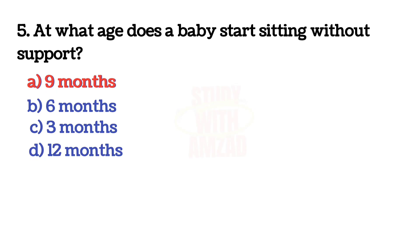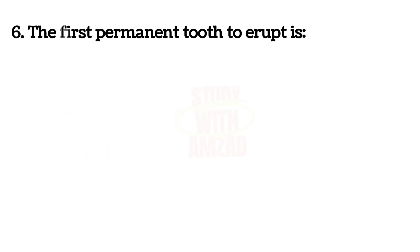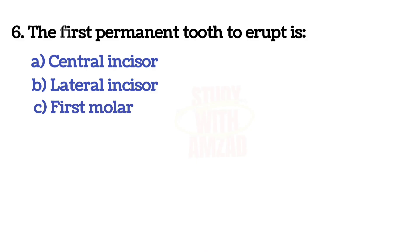Next question: The first permanent tooth to erupt is? The answer is C — first molar.